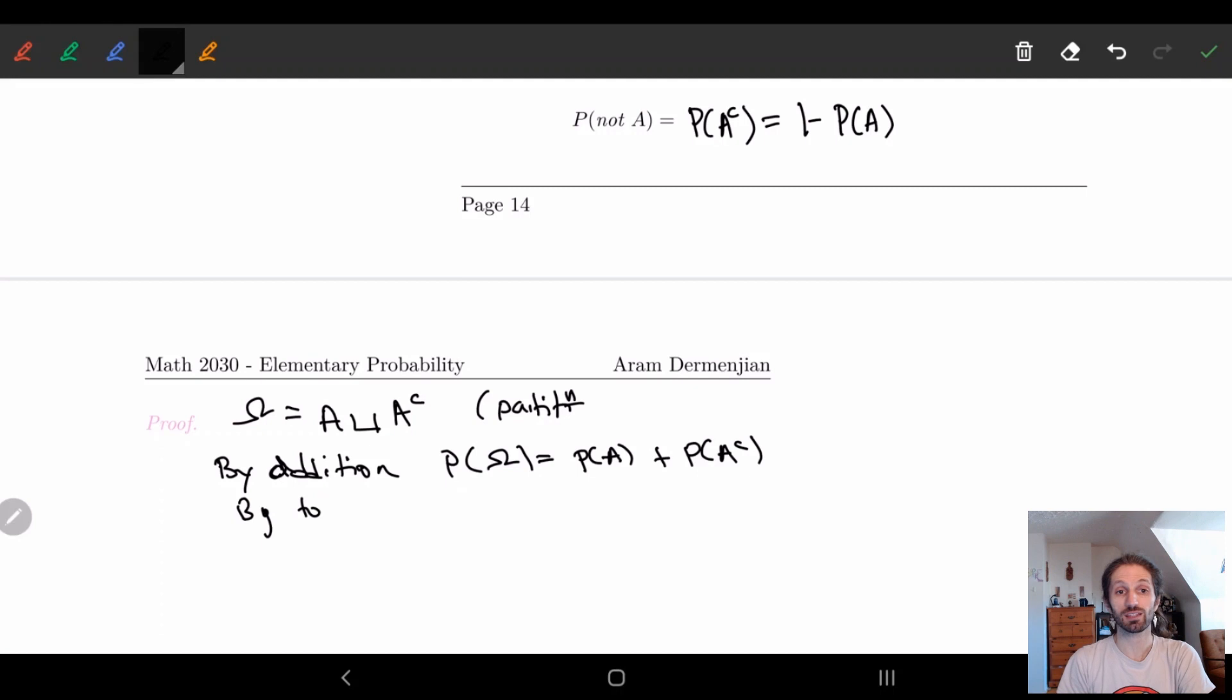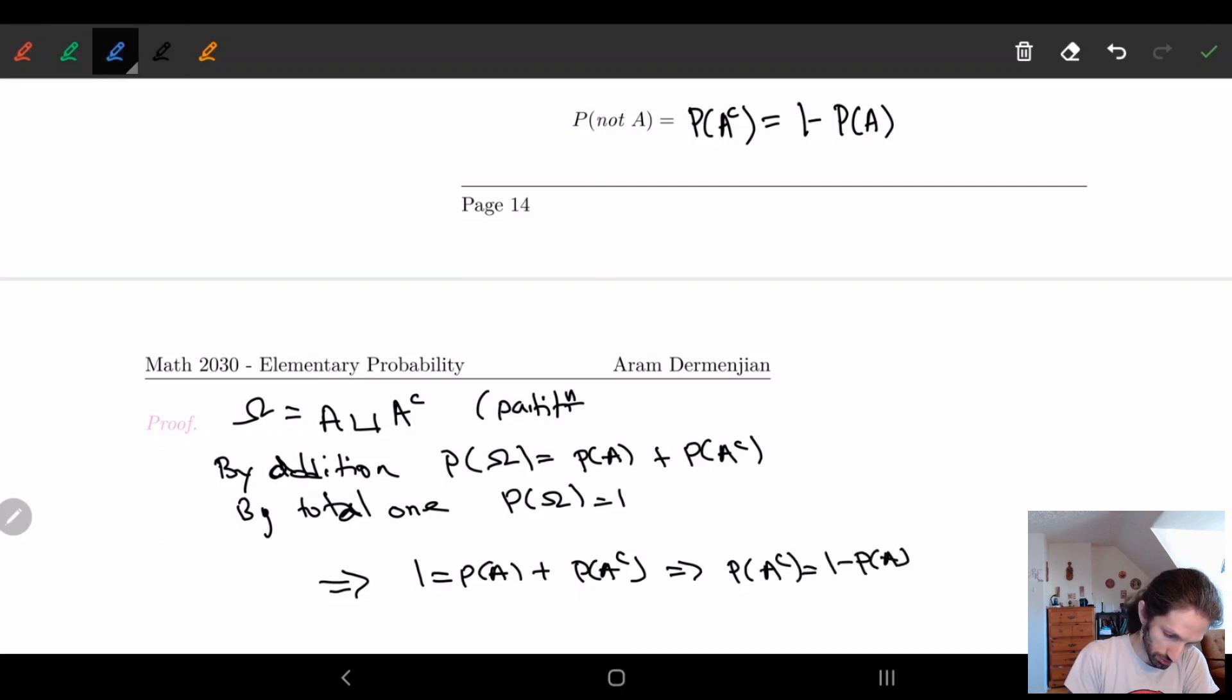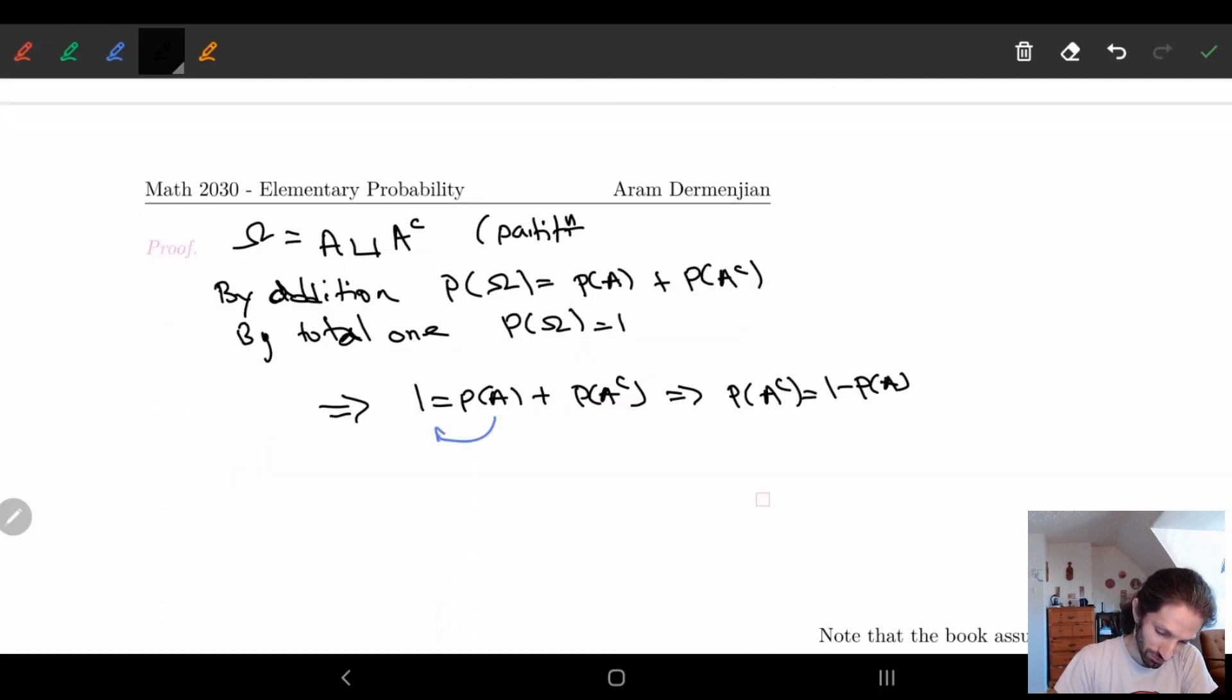So next, we need to figure out, we need to take this P(omega) and make it become a one. And that we can just do by the total one. So by total one, we know P(omega) is equal to 1. And so this whole thing basically gives us exactly what we want. So this implies that 1 equals P(A) plus P(A^c). And rewriting this, we get P(A complement) is equal to 1 minus P(A). So here I just took P(A) and I moved it to the other side. And that's it. So that is our first theorem. Congrats. You've now proved a theorem in class. Woo! Party!